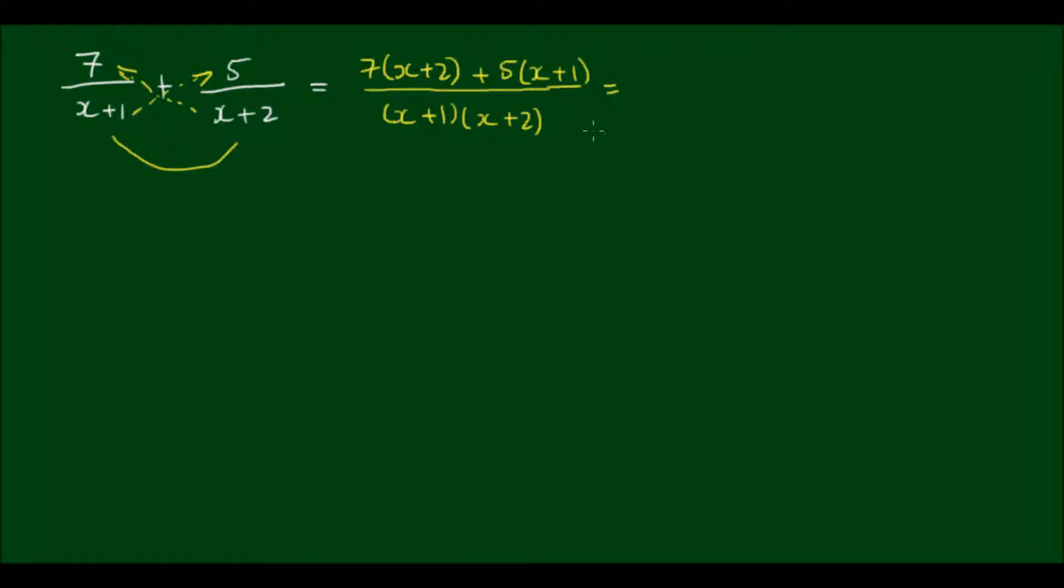And then if I was to expand and simplify, I would get 7x plus 14 plus 5x plus 5 divided by x squared plus 2x plus x plus 2.